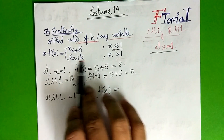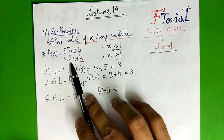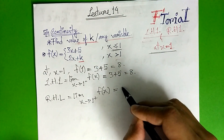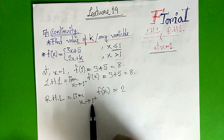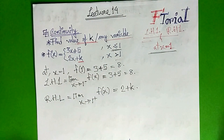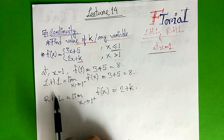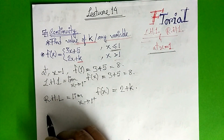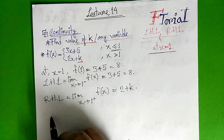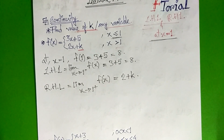Here comes the right hand limit. So 2x is equal to 1; 2 into 1 is equal to 2; 2 plus k equals 0; so j2 is equal to 0. It is continuous — equal to the right hand limit.